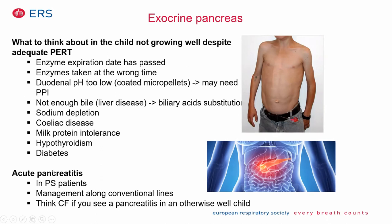If a child is not gaining weight despite enzyme replacement, consider several causes. Enzyme pellets (like Creon) are coated to resist acid in the stomach and activate in the alkaline duodenum. If the duodenum is too acidic — a problem in CF — the pellets will not dissolve and the fats cannot be digested. This is a key and underappreciated reason for failure of enzyme therapy.